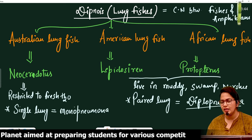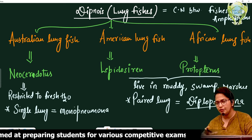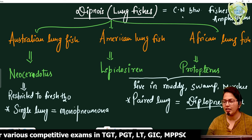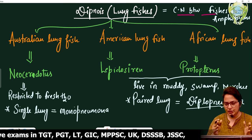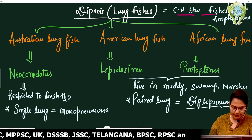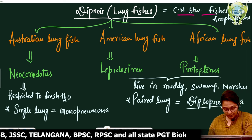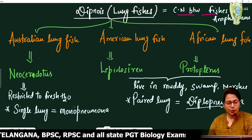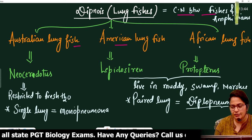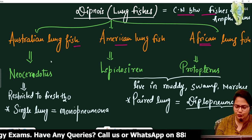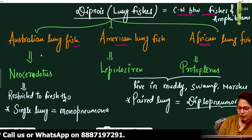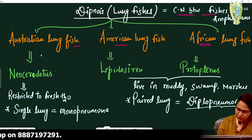Lung fishes are a connecting link between fishes and amphibians. You can see here that there is the Australian lung fish, American lung fish, and African lung fish. Students are often confused about these three.